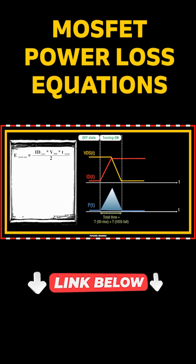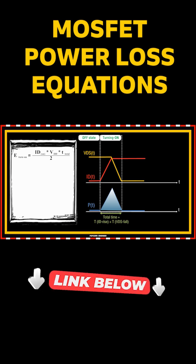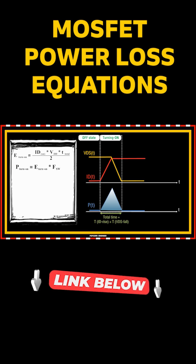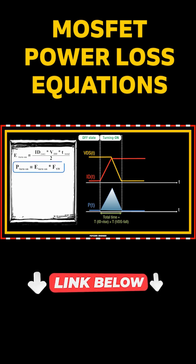To get the turn-on power losses, you need to multiply this energy by the switching frequency, as this determines how many times per second there will be turn-on energy dissipation.